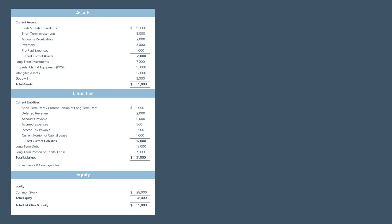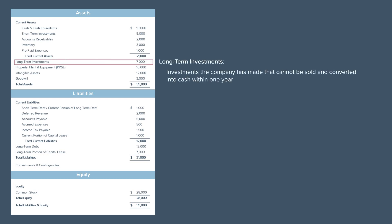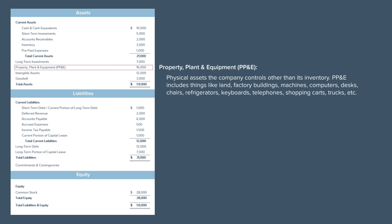Now let's talk about long-term assets. Long-term investments are investments the company has made that cannot be sold and converted into cash within one year. They're usually investments in privately held companies. Unlike publicly traded stocks and bonds that can be sold at the click of a button, these investments can't be liquidated without an extended sale process. Property, plant, and equipment — or PP&E — relates to physical assets the company controls other than its inventory. PP&E includes things like land, factory buildings, machines, computers, desks, chairs, refrigerators, keyboards, telephones, shopping carts, trucks, etc.